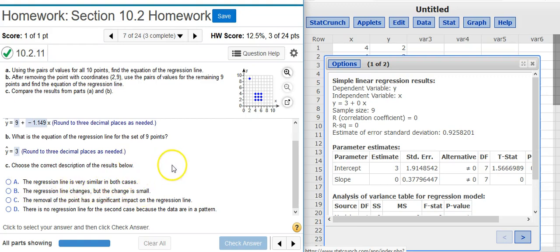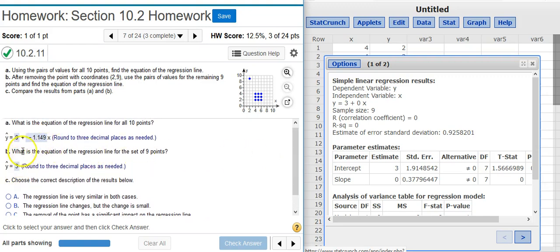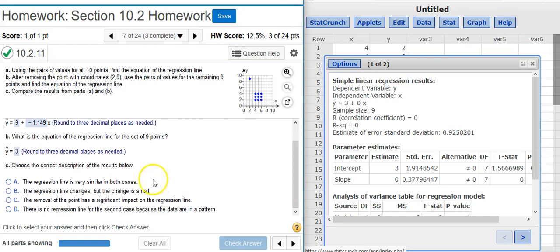Option A says the regression line is very similar in both cases. Well, that's not true. I mean, just look at the regression line equations here. This is a line with a negative slope to it. But this is a line with, well, really no slope to it because it's just a straight horizontal line. So answer option A isn't going to work for us.